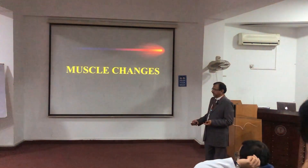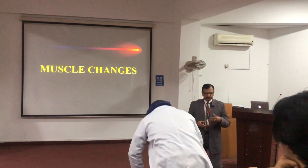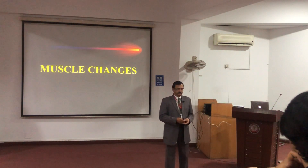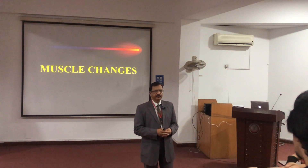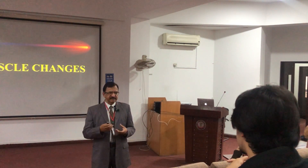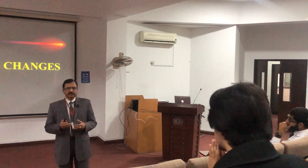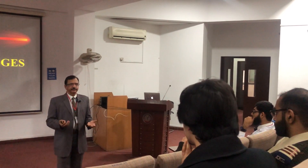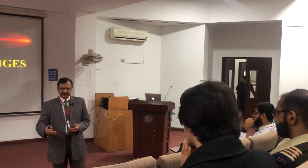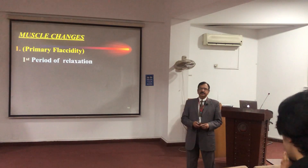Continuing with the early changes of the muscle after death. What are the changes which appear in the muscle? The cause of muscle relaxation initially is the loss of innervation. The nerve supply is lost, and because of loss of tone, immediately there will be primary flaccidity. Relaxation is the first change which the muscles show after death, and this is the first period of relaxation.